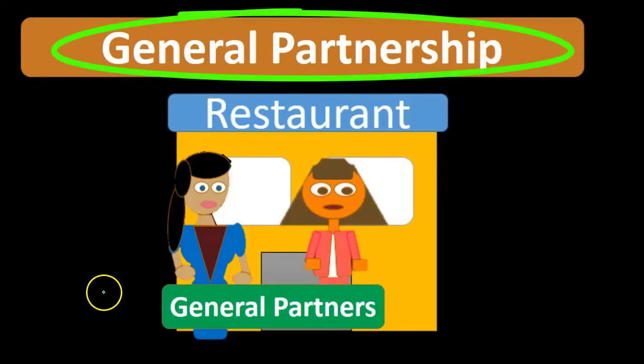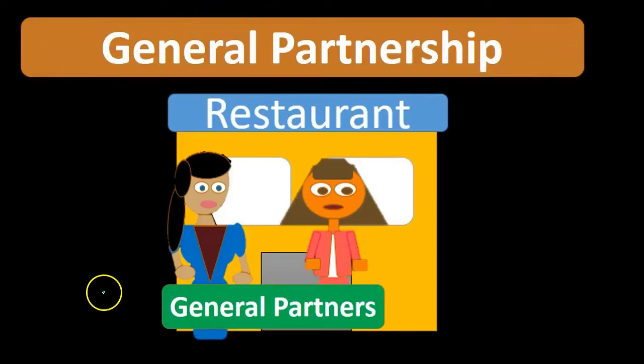It's also important to note that in a general partnership the assets of the partnership have mutual agency, meaning both partners are able to make decisions about the assets and liabilities.